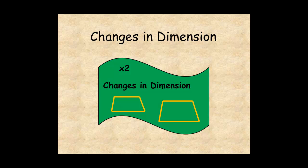This lesson showed you how the perimeter and the area of polygons are affected by changes in dimension.